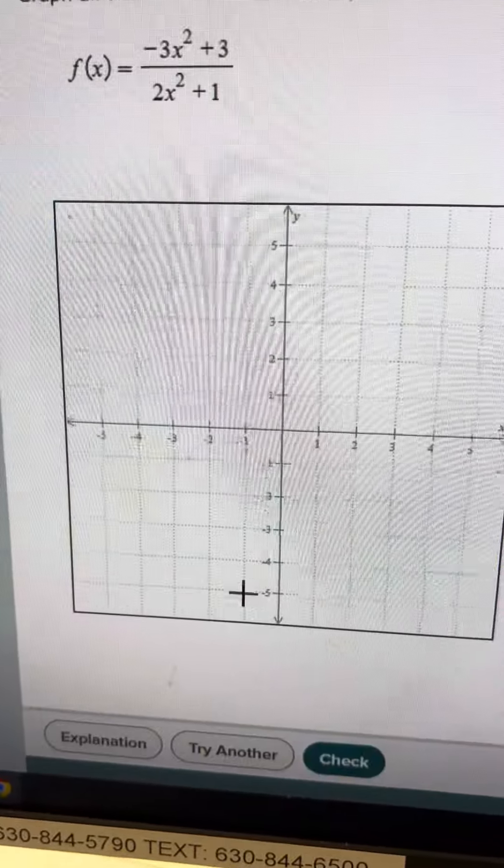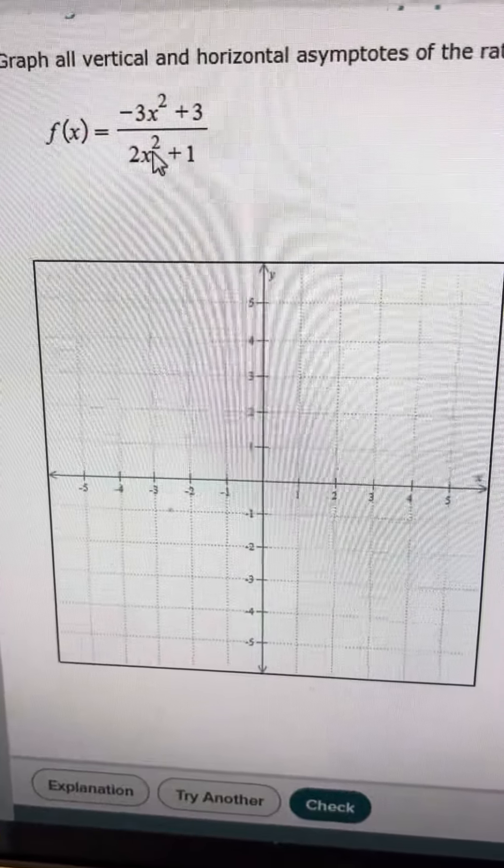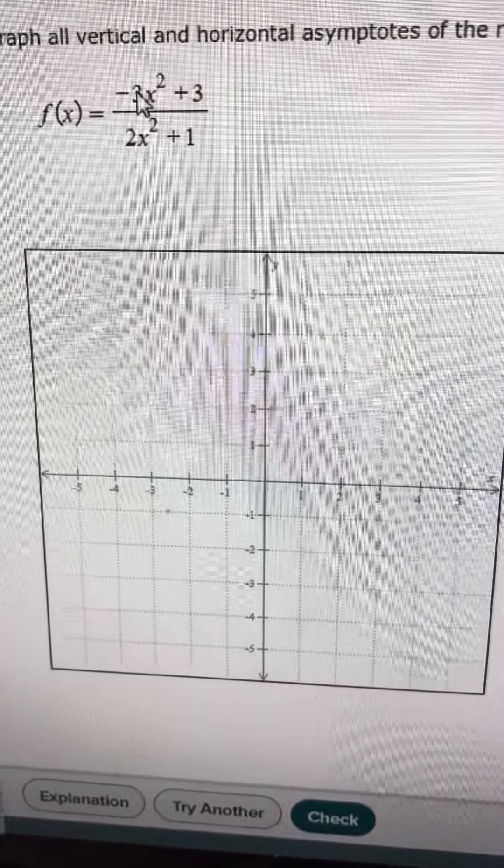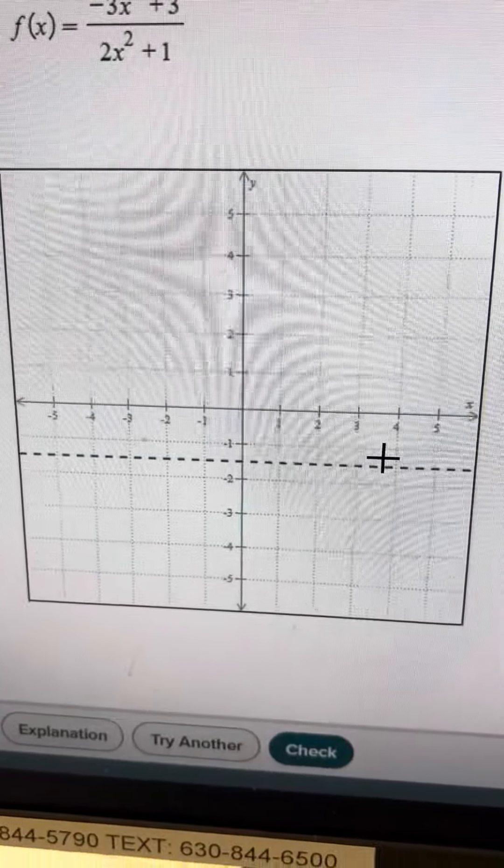We'll do one more. Once again, you'll never have any vertical asymptotes, but you'll have a horizontal asymptote at y equals negative 3 over 2, which is negative 1.5 right there,